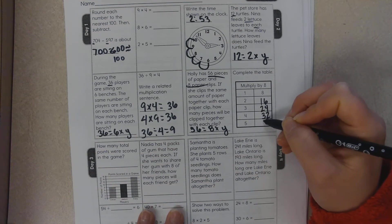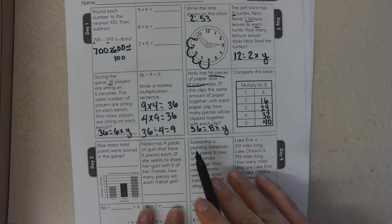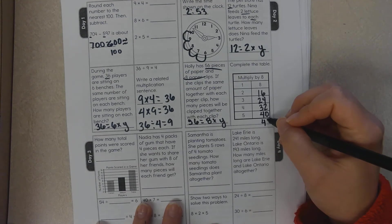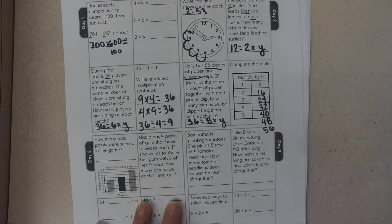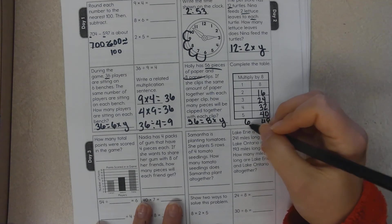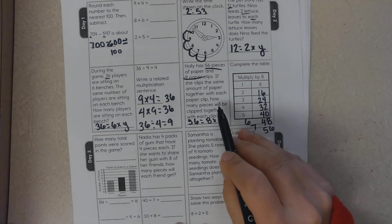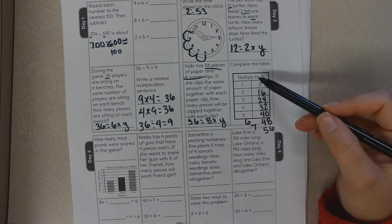If we continue this on, it'd be 48, 56. So that would be six and seven. So seven times eight equals 56. We found the answer to this one in this model.